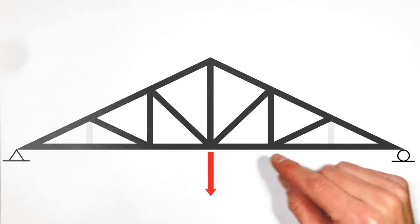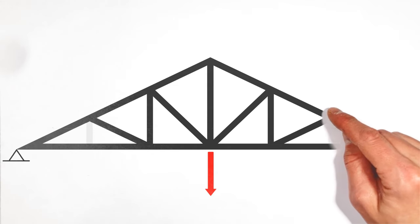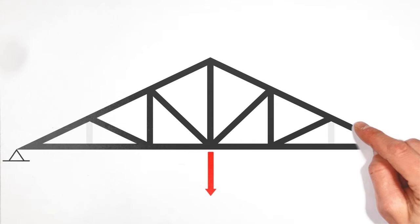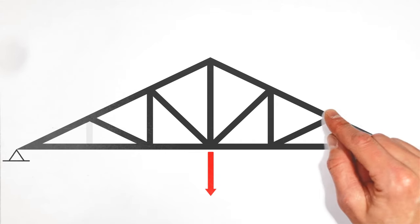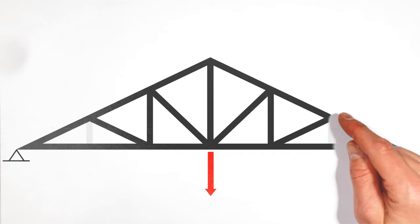And look at this truss now. You see, right here, we now have two members in line with each other, and then this third member is intersecting them at an angle.